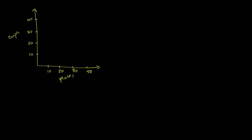Let's still put Patty — let's assume Patty hasn't changed, so this is her PPF. But let's say that Charlie has improved dramatically, and so Charlie's PPF now looks like this. So in a given day, using the same number of inputs, he can produce 40 cups when Patty can only produce 10 — so he has the absolute advantage in cups. Or in the same given day using the same inputs, he can produce 40 plates while Patty can only produce 30. So now Charlie has an absolute advantage in both products.